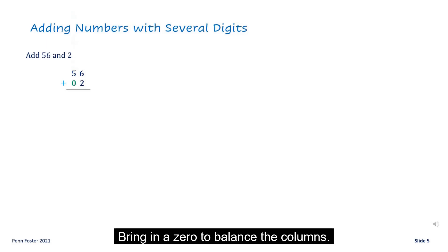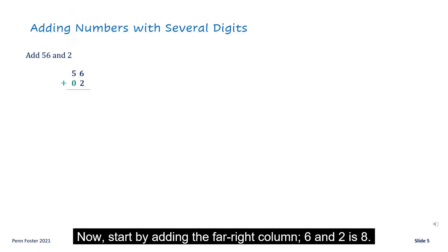Now start by adding the far right column. Six and two is eight. Work on that second column. Five and zero is five. The sum is fifty-eight.